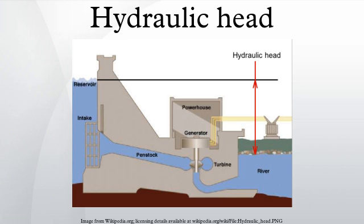Hydraulic head in groundwater: The distribution of hydraulic head through an aquifer determines where groundwater will flow. In a hydrostatic example where the hydraulic head is constant, there is no flow. However, if there is a difference in hydraulic head from the top to bottom due to draining from the bottom, the water will flow downward due to the difference in head, also called the hydraulic gradient.